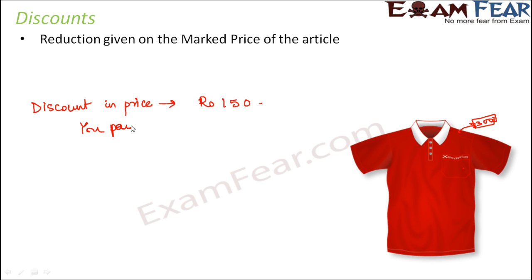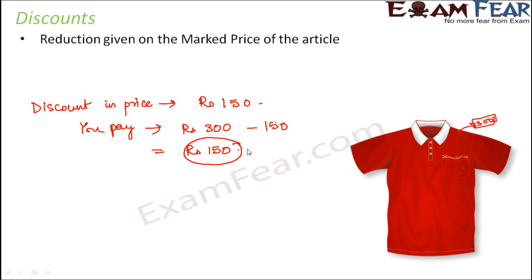So how much would you pay for the t-shirt? The marked price is basically the price mentioned on that particular article. Any item — whether a t-shirt, shampoo, or grocery item — will have an MRP marked on its packet. You pay the marked price minus the discount, so you pay only rupees 150.